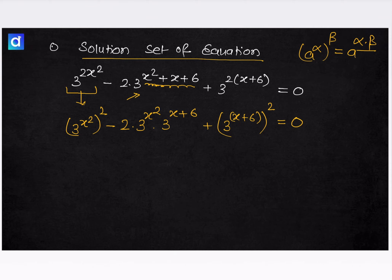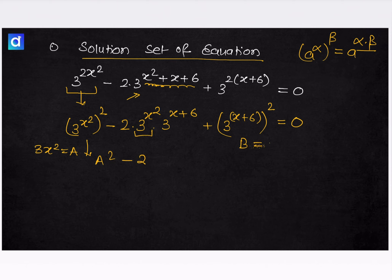So if we see here, if we let 3 to the power x squared equal to a, we can write this as a squared minus 2a. And we can write the other term as 3 raised to the power x plus 6.